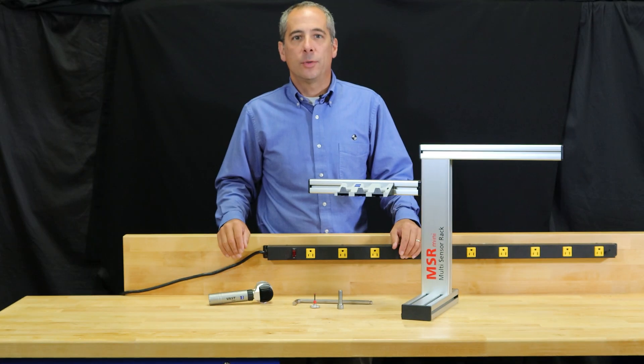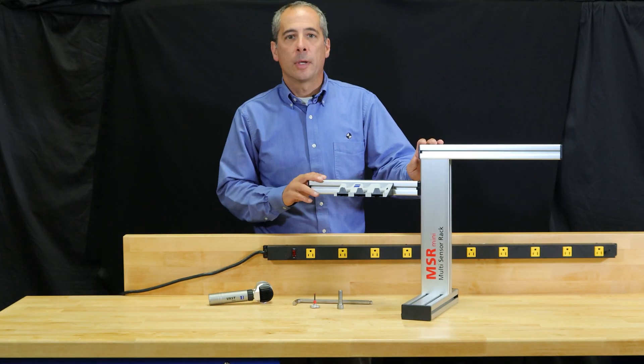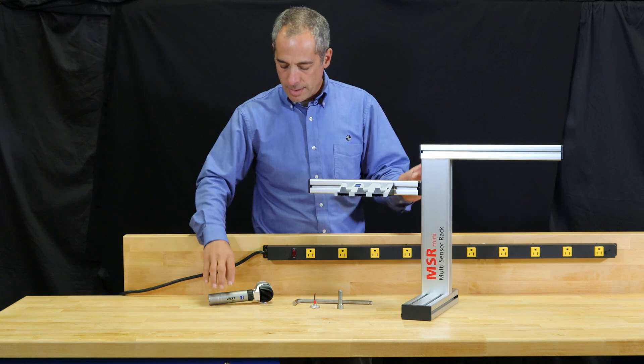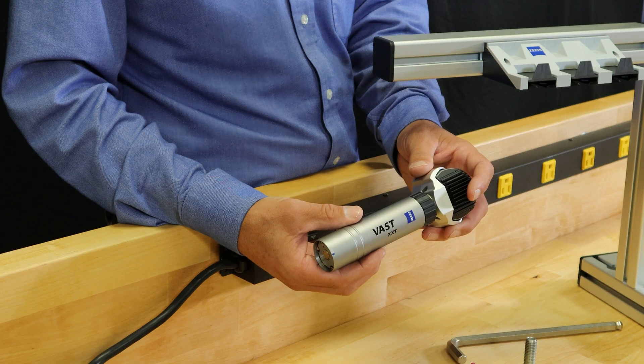In this episode of How To Metrology, we're going to talk about how to install a probe rack on your Zeiss CMM that uses a Vast XXT sensor.